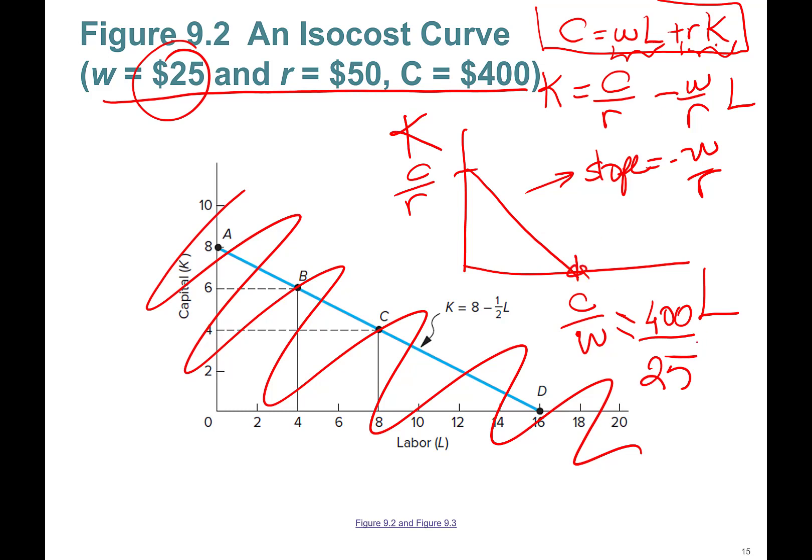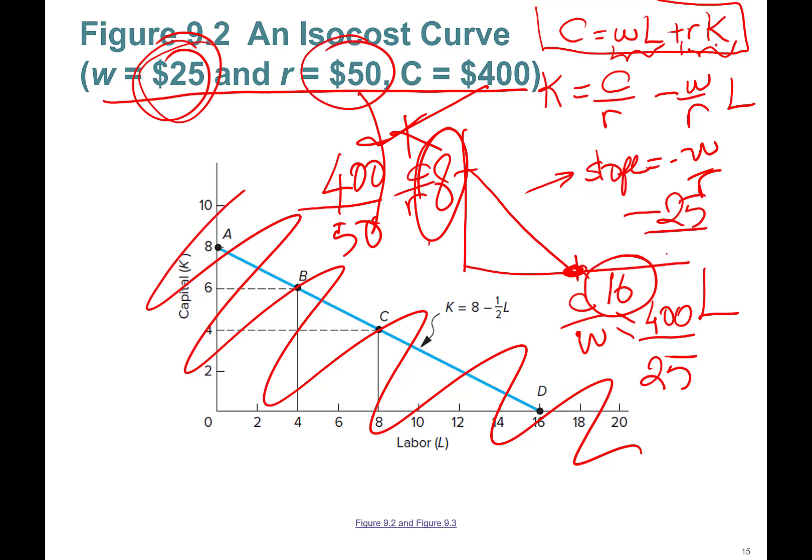Let's plug in numbers. C over—400 over wage rate is $25. Okay, so this is, first of all, going to be what? 16. 16 maximum labor you can hire if you only hired labor. C over r, $50. 400 divided by 50, that's going to be 8. So if you only hired capital, you can maximum hire 8 units of capital. Negative w over r: negative 25 over 50, so it's negative one-half. That's the budget line slope.